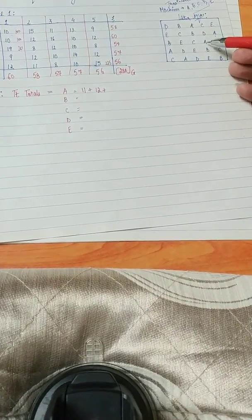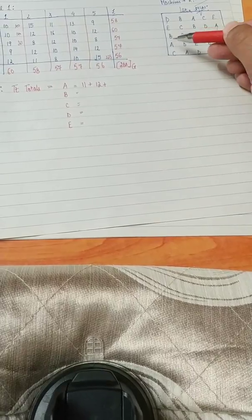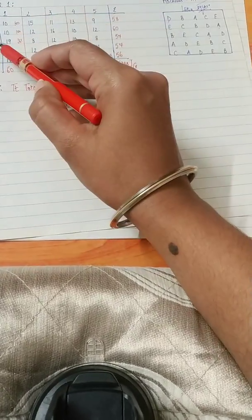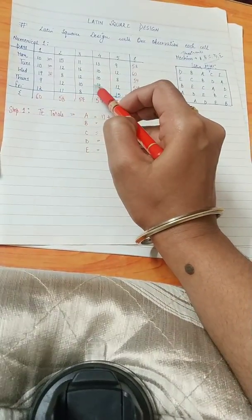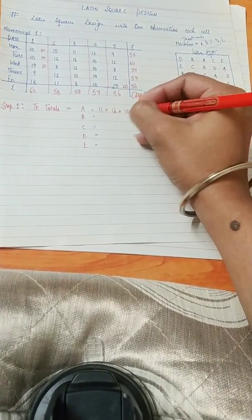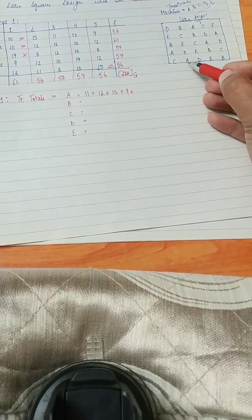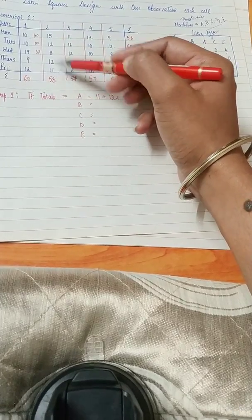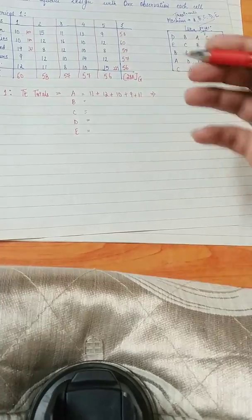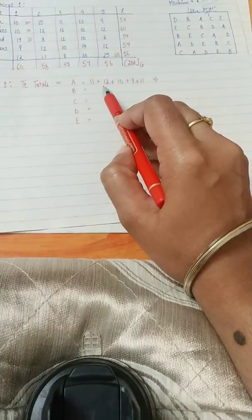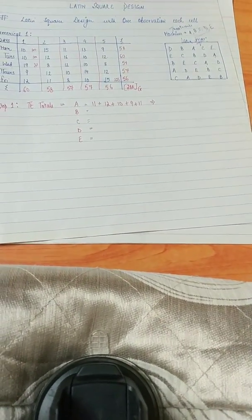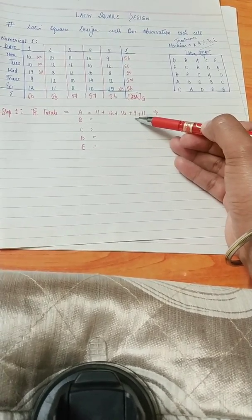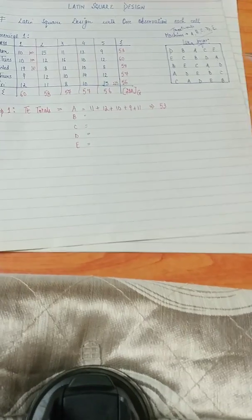In the third row, A is the fourth observation — value is 10. In the fourth row (Thursdays), A is the first observation — value is 9. In the last row (Fridays), A is the second observation — value is 11. So the data for machine A across all five days is: 11 + 12 + 10 + 9 + 11 = 53.